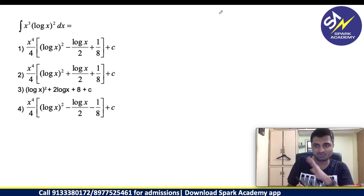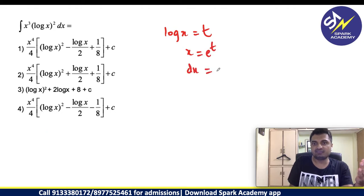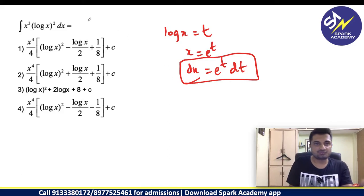Log x, assume it to be t. If you are assuming log x to be t, x will be eᵗ. So dx will be eᵗ dt.